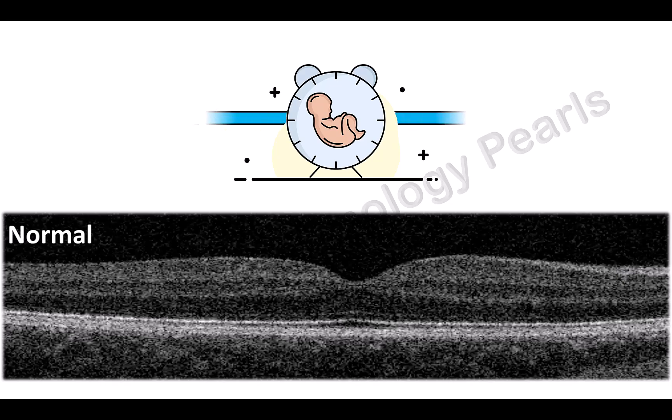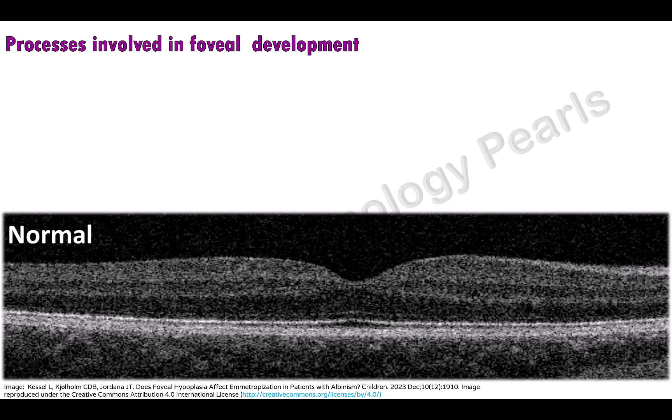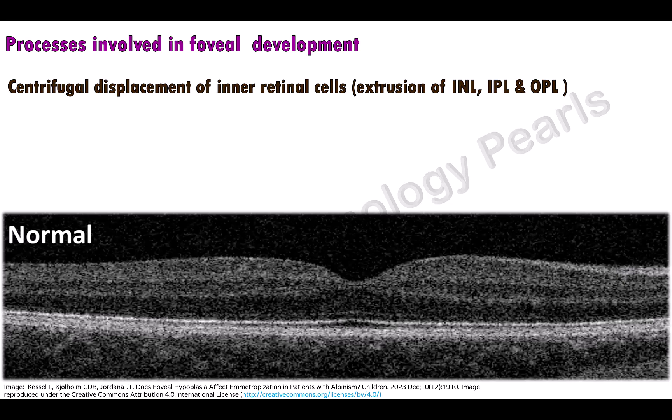The foveal pit starts developing in the 25th week of gestation and is complete by 15 to 45 months after birth. The processes involved in foveal development are centrifugal displacement of cells of the inner retina toward the periphery, seen as complete extrusion of the inner nuclear layer, inner plexiform and outer plexiform layers — meaning these layers are not present posterior to the foveola. This is responsible for deepening of the foveal depression.